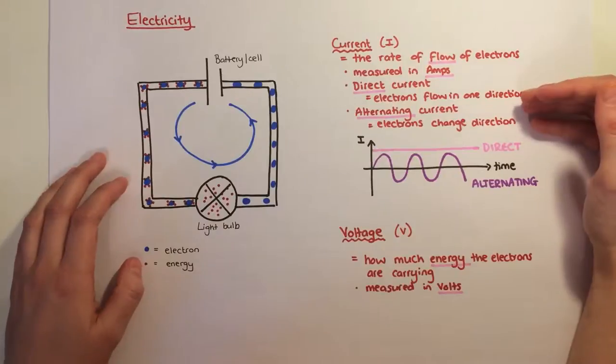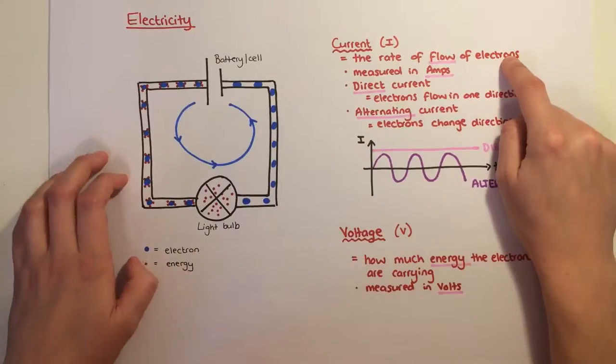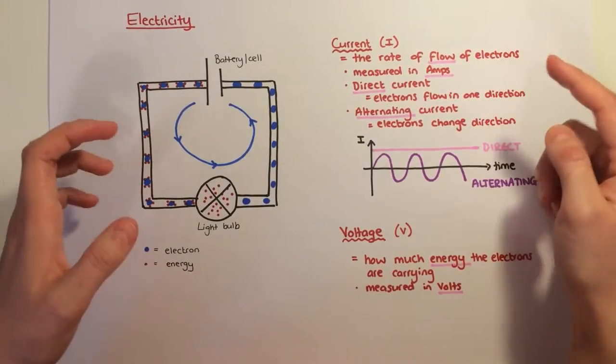There are two definitions that we need to know. Current is how fast these electrons are moving around, the rate of flow of the electrons, and that's measured in amps. There are two types of current: